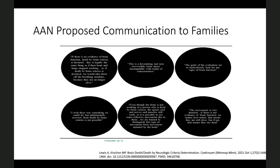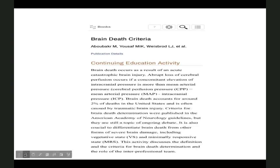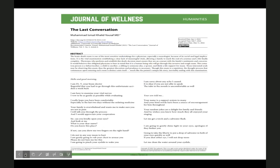Coming to the end, these are six good quotations proposed by AAN for communication to families — because how you word the conversation that a patient has died is very difficult. Most of us use phrasing such as: 'This is a devastating and non-recoverable brain injury incompatible with the return of consciousness. I wish there was something we could do, but unfortunately recovering from death by brainstem criteria is not possible.' I also co-authored a brain death criteria book chapter and wrote a poem on brain death criteria, both published recently.